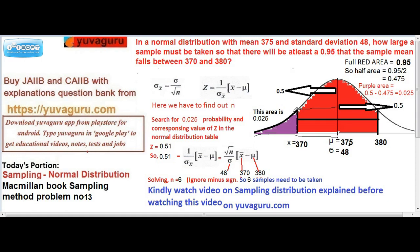So what would be this area, this purple color? 0.5 minus 0.475, that is 0.025.